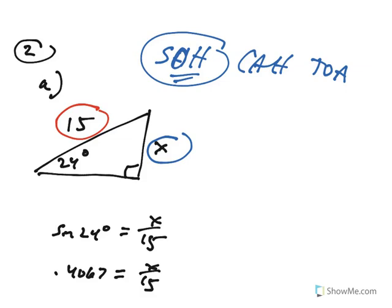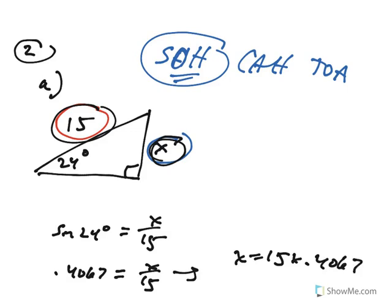This tells us that x is a little less than half of 15. The ratio of opposite to hypotenuse is 0.4067 — the opposite is about 41% as big as the hypotenuse. Cross-multiplying gives x = 15 × 0.4067, which equals about 6.1.